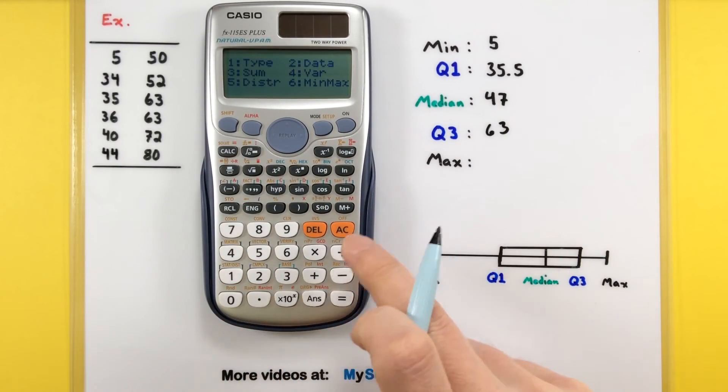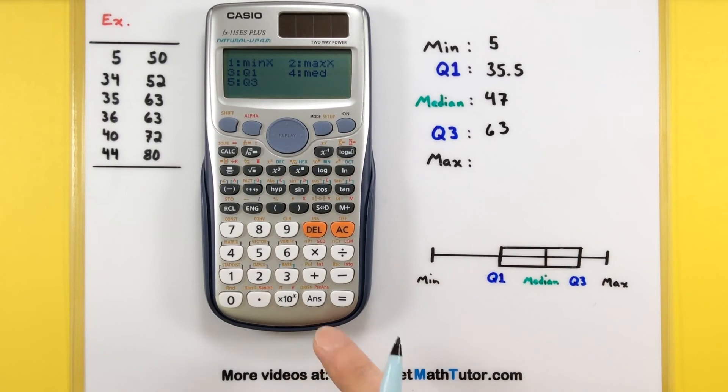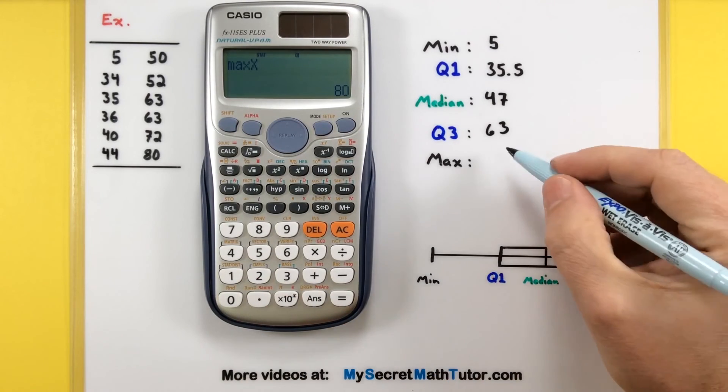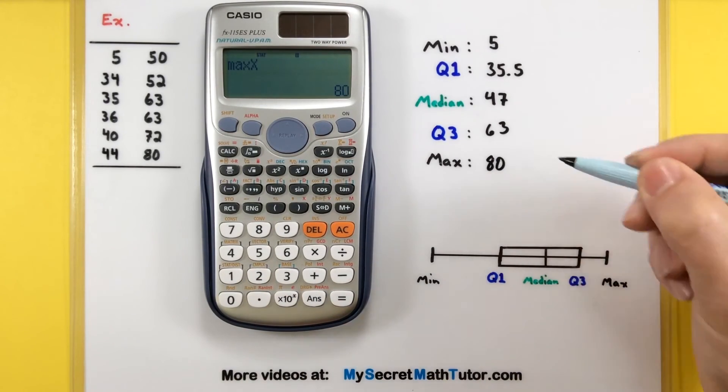And one last one. Min max. This one we want the max. That's number two. And we have 80.